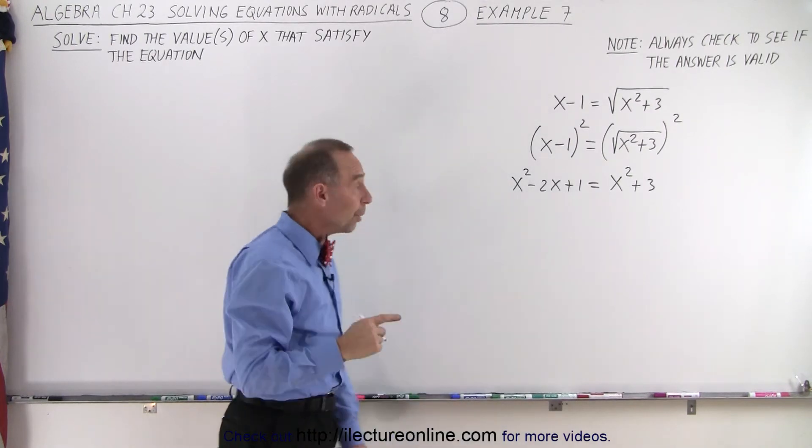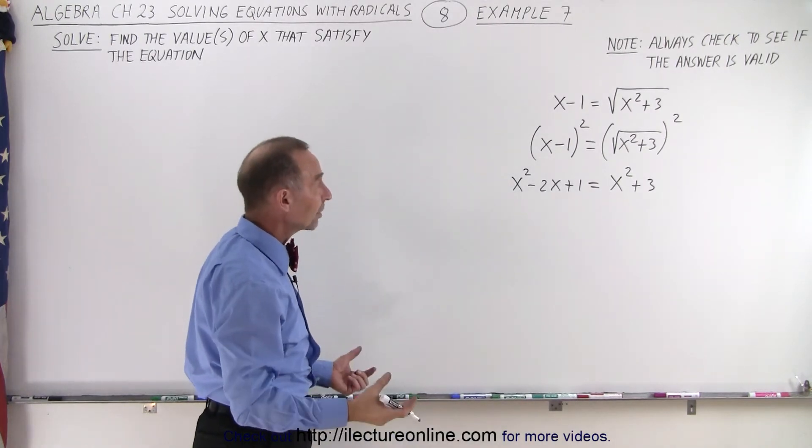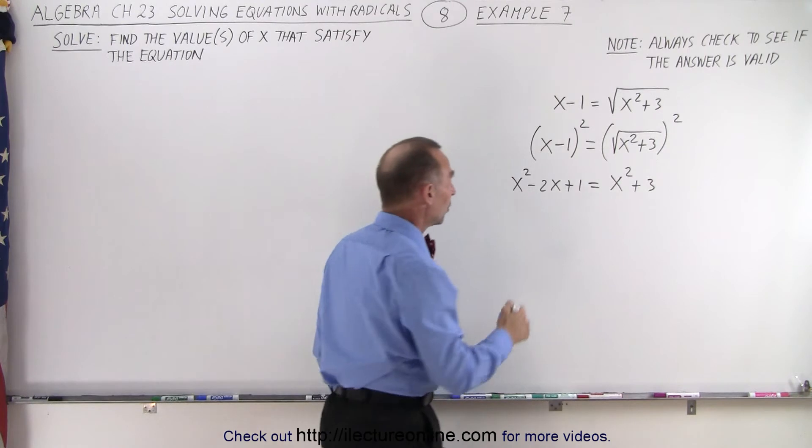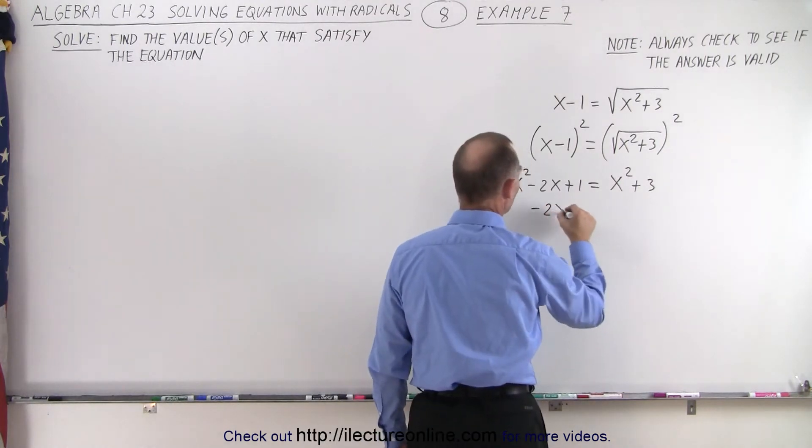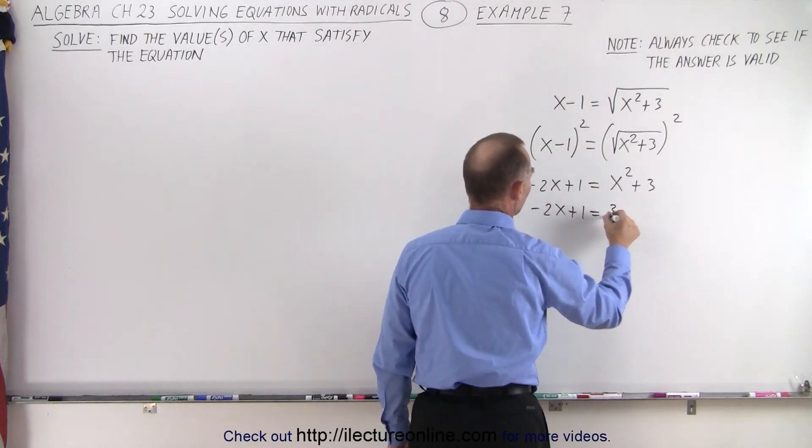Now, notice we have an x squared on both sides. So, we could subtract an x squared from both sides. When we do that, we get minus 2x plus 1 equals 3.